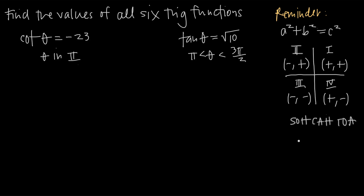Our six circular trig functions are sine and cosecant, cosine and secant, and tangent and cotangent. Each of these are reciprocal identities of one another. Tangent is equal to 1 divided by cotangent, cosine is 1 over secant, and sine is 1 over cosecant. So we really only have to find three of these trig functions and we get the other three thrown in.